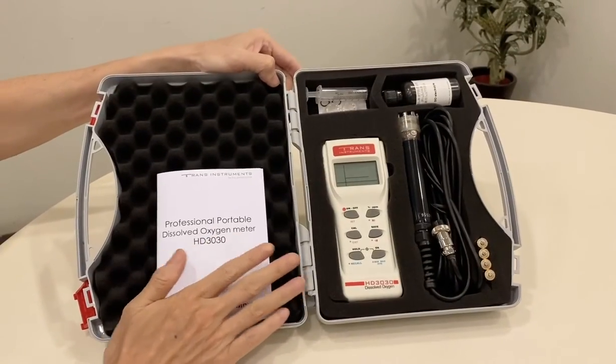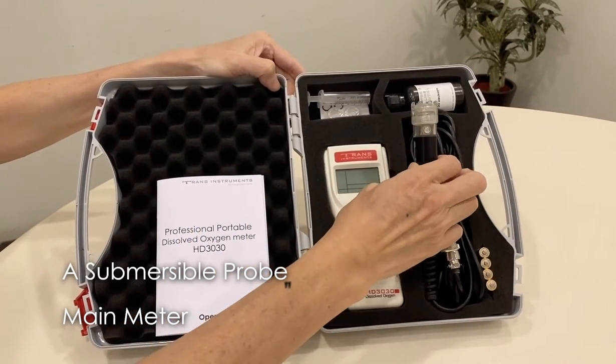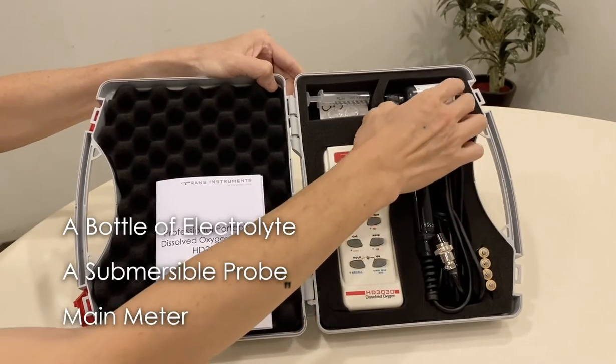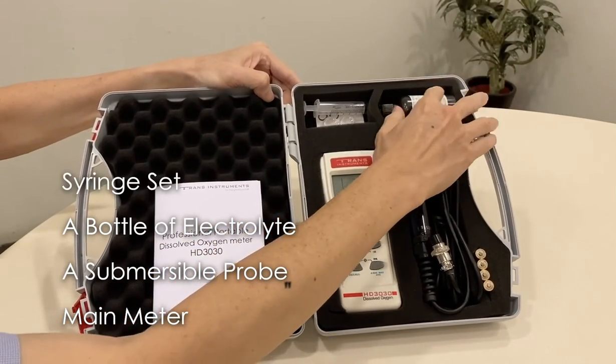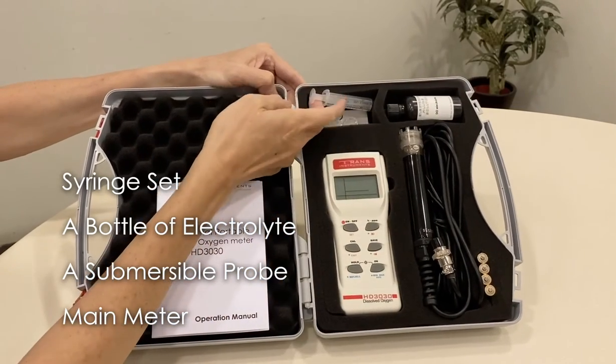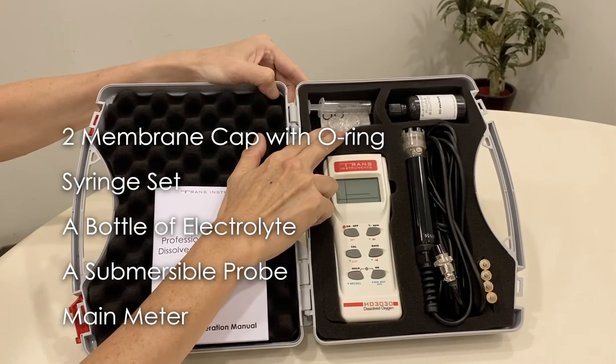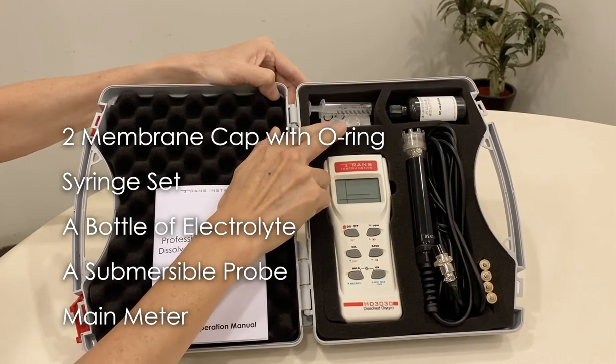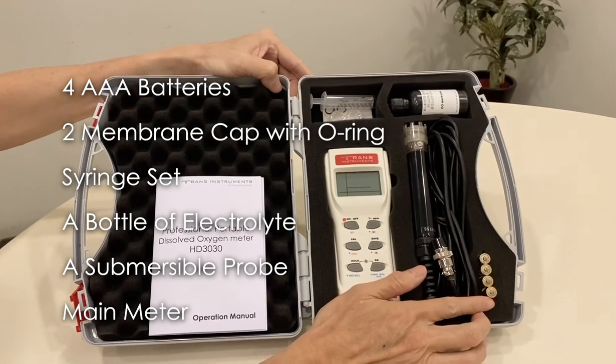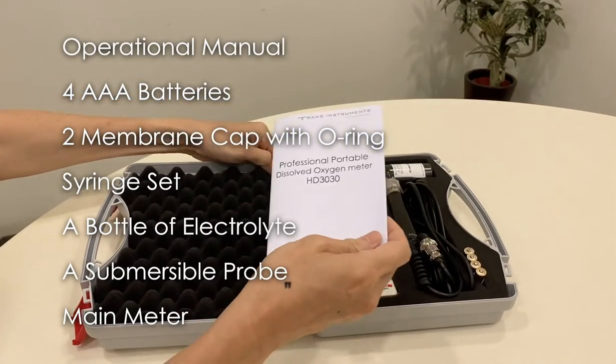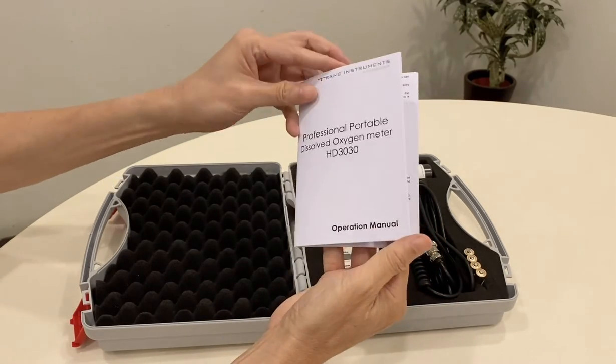We have here the main meter, a submersible probe, a bottle of electrolyte, string set, two spare membrane caps with O-ring for probe maintenance, four AAA batteries and an operational manual. Please read the manual carefully before you begin.